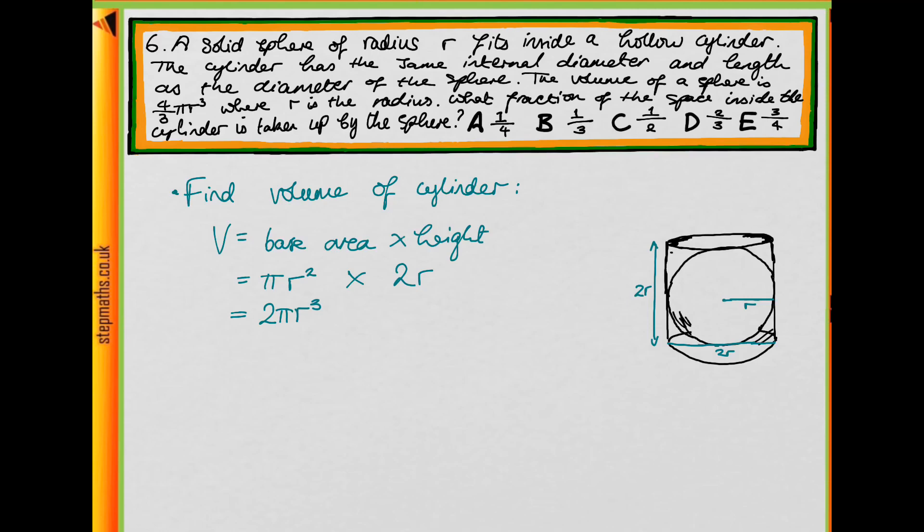Now what we want to do is compare the volumes because we're given the volume of the sphere as 4/3 πr³. To compare the volumes so that we get a fraction of what the space inside the cylinder taken up by the sphere is, we're going to use division.